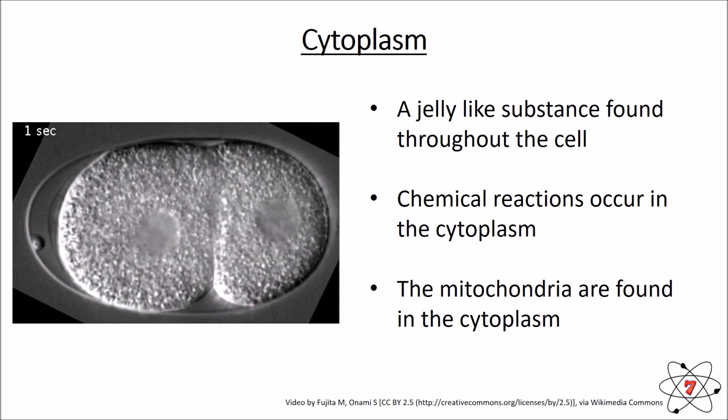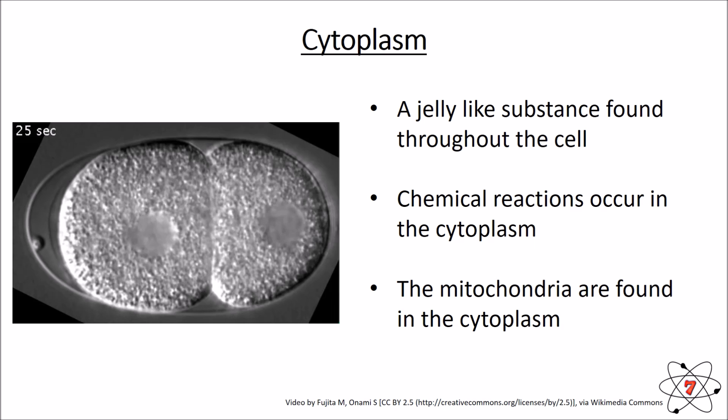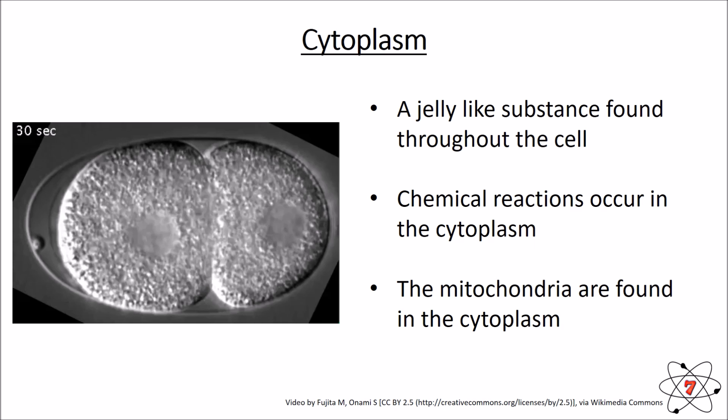Our next organelle is the cytoplasm. It makes up the bulk of the animal cells. As you can see from that little video clip, it's kind of like jelly. It's where all of the chemical reactions happen — not big explosions, but things that keep you alive. The next organelle we're going to look at is also found in the cytoplasm.